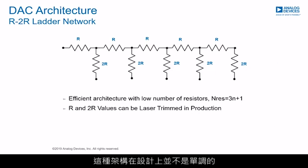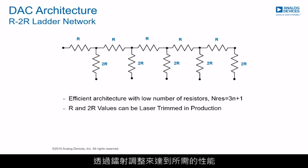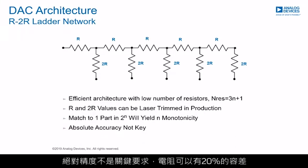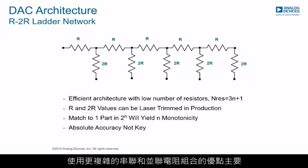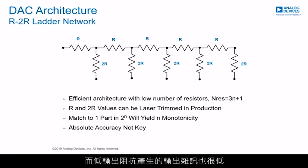This architecture is not monotonic by design and typically requires post-calibration or laser trimming to achieve the required performance. Absolute accuracy is not a key requirement and resistors can have a 20% tolerance, but to yield a monotonic DAC, the resistors need to match to one part in 2 to the power of N. The main benefits of using a more complex combination of serial and parallel resistors are that switches are connected to a low impedance source minimizing transients, and the low output impedance generates low output noise.